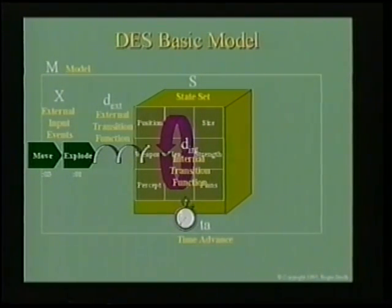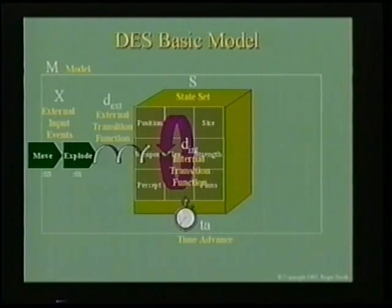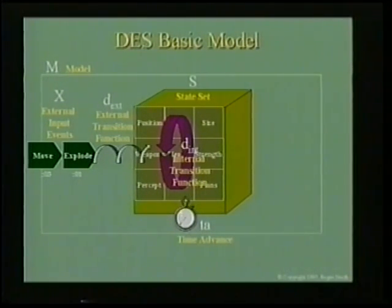The internal transition functions are responsible for changing the values of the state. They may not understand what an explosion means, but they know what it means to change position, health, or size. They know where those state variables are located and will change them — the internal transition function makes a state change.